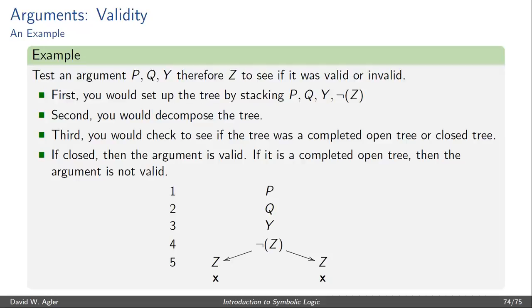What we do is take the formulas P, Q, Y, and the negation of the conclusion, not Z, and stack it on lines 1 through 4. From there, we would go and decompose the rest of the tree using the decomposition rules discussed in an earlier video. If we found that all of the branches closed,